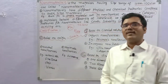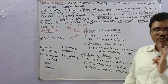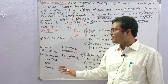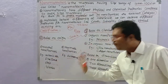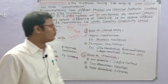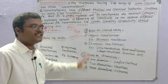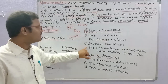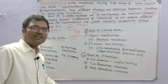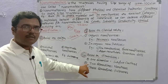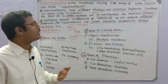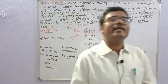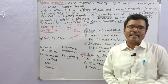Nanomaterials are classified based on three criteria. Criteria number one is based on origin: there are two types — natural nanoparticles and man-made or artificial synthetic nanoparticles. Based on chemical nature, there are two types: organic nanoparticles and inorganic nanoparticles. Based on dimension, there are three types: one-dimension, two-dimension, and three-dimension nanoparticles. That is about nanomaterials, their classification, and their importance. Thank you for watching.